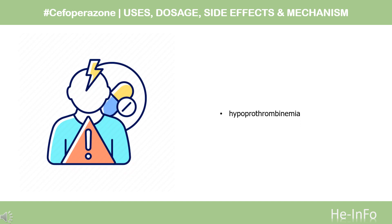Cefoperazone contains an N-methylthiotetrazole (NMTT, or 1-MTT) side chain. As the antibiotic is broken down in the body, it releases free NMTT, which can cause hypoprothrombinemia, likely due to inhibition of the enzyme vitamin K-epoxidase, and a reaction with ethanol similar to that produced by disulfiram (Antabuse), due to inhibition of aldehyde dehydrogenase.